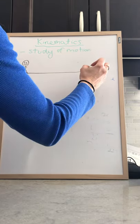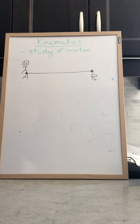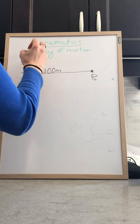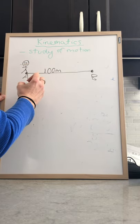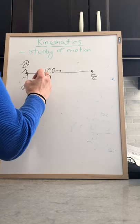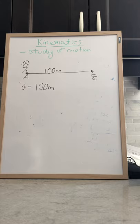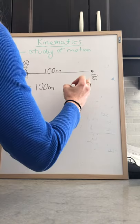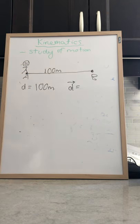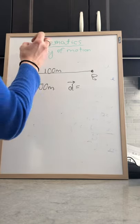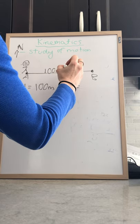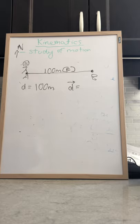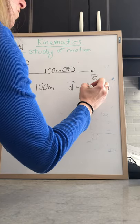Let's say I walked from a starting point A to point B, and point B was 100 meters away. My total distance would be 100 meters. Now looking at displacement — remember, displacement is a vector quantity, so you must have a direction. If we say this direction is north, then east would be perpendicular to that. My total displacement would be 100 meters east.